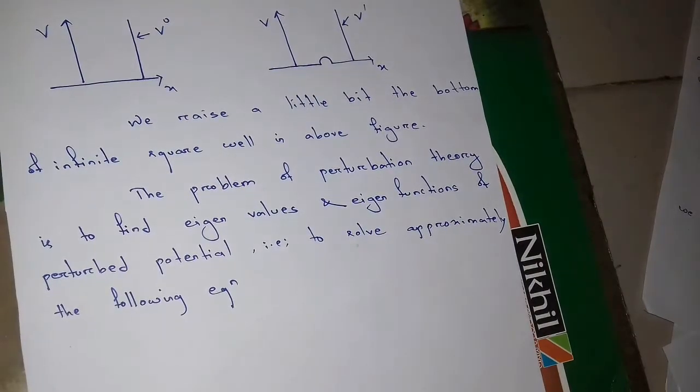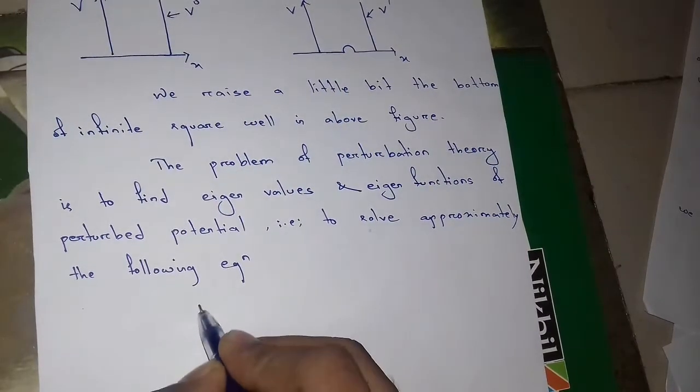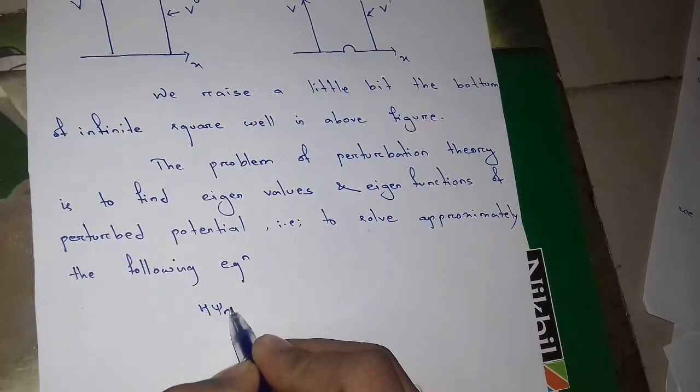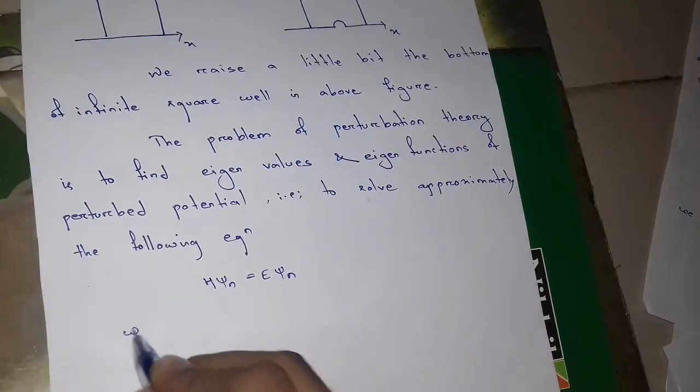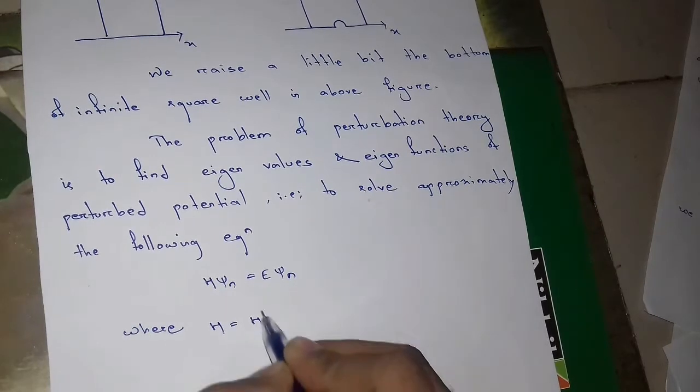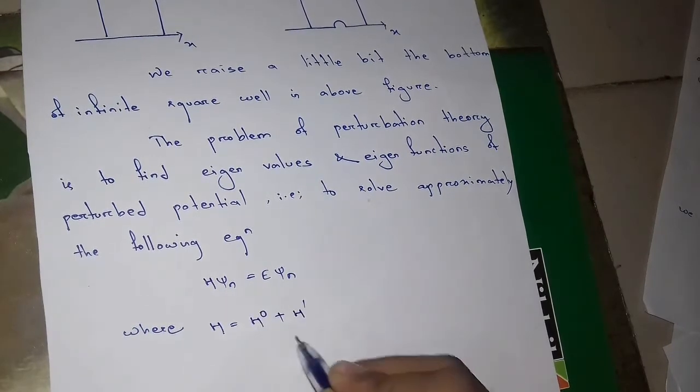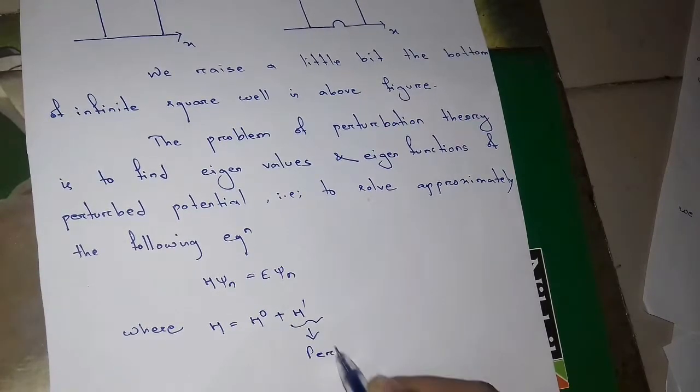And the problem of perturbation theory is to find eigenvalues and eigenfunctions of perturbed potential to solve approximately the following equation. We will have to solve H psi n equals to E psi n where H equals to H0 plus H dash and this equation is called perturbation.